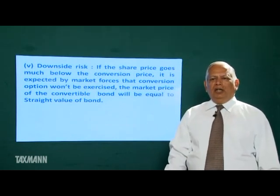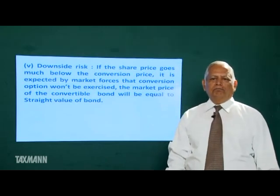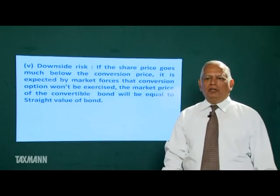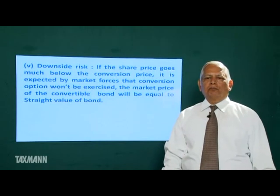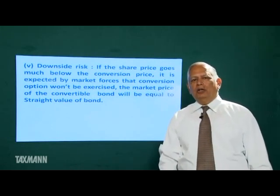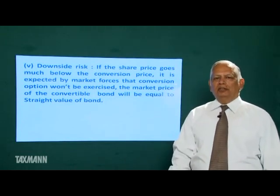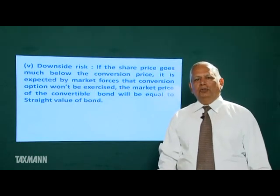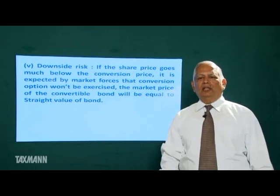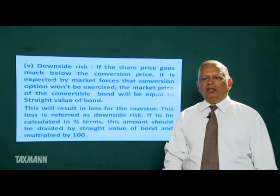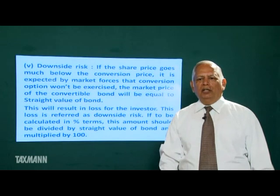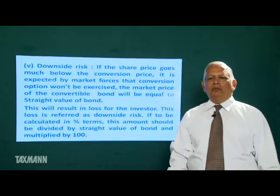Downside risk: if the share price goes much below the conversion price, it is expected by market forces that the conversion option won't be exercised, and the market price of the convertible bond will be equal to the straight value of the bond. Suppose conversion price is Rs. 20 and market price per share goes much below Rs. 20 — the value of the bond will come down to its straight value. The resulting loss for the investor is the downside risk, calculated as a percentage by dividing the loss by the straight value of the bond and multiplying by 100.